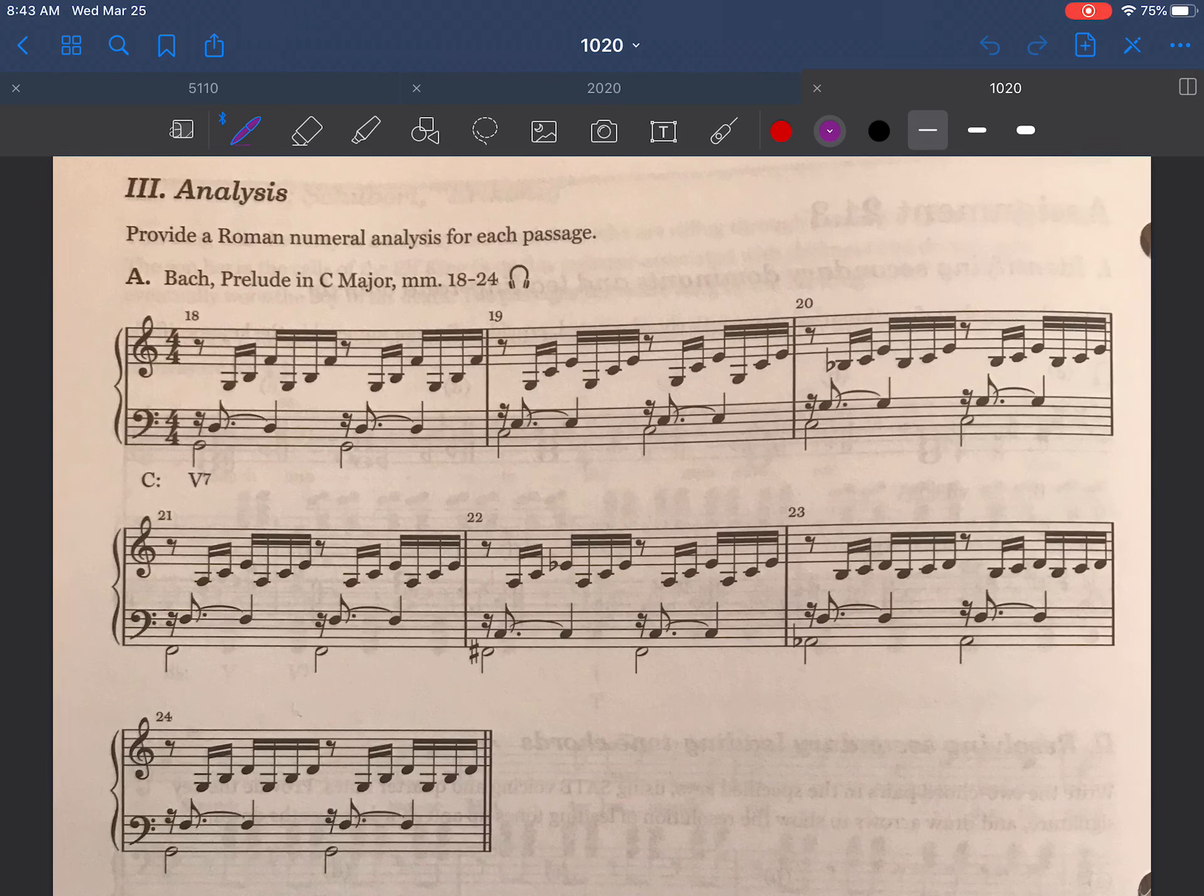This is a demo of doing some Roman numeral analysis for an example by Bach. This is the Bach prelude in C major. It's a portion from about the middle, it's about two-thirds of the way through the piece.